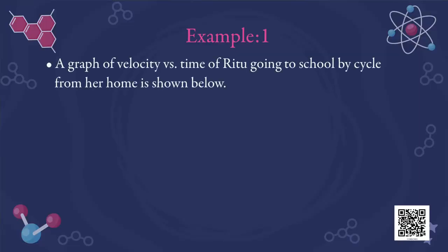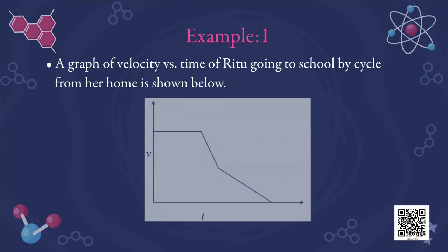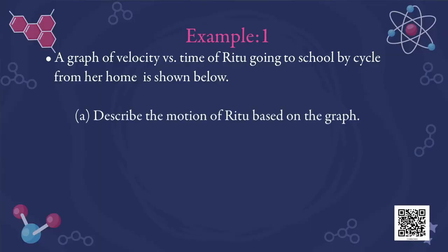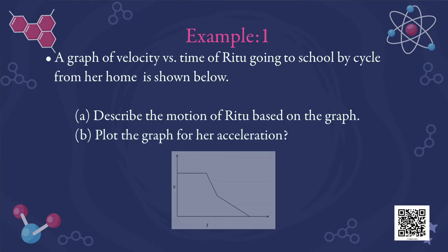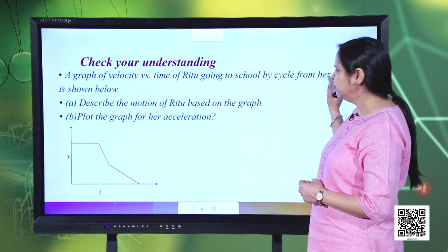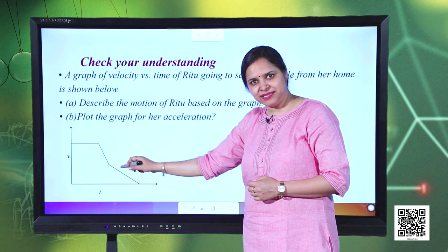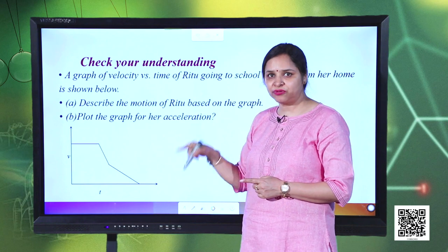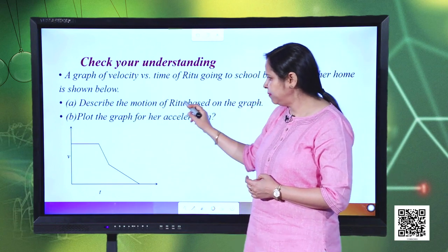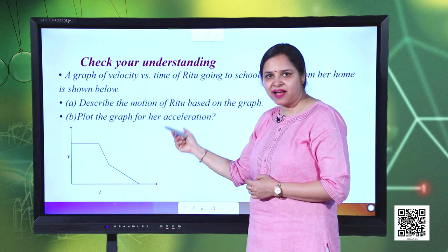Now let us take one more example. A graph of velocity versus time of Ritu going to school by cycle from her home is shown. We need to describe the motion of Ritu based on the graph, and secondly, we need to plot the graph for her acceleration. Let us study this v-t graph. The x-axis has time, the y-axis has velocity, and we divide the motion into three time intervals: 0 to t₁, t₁ to t₂, and t₂ to t₃.